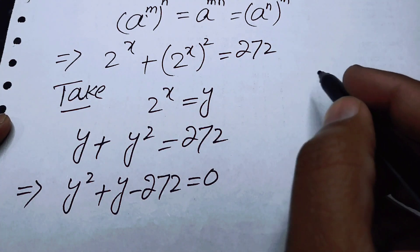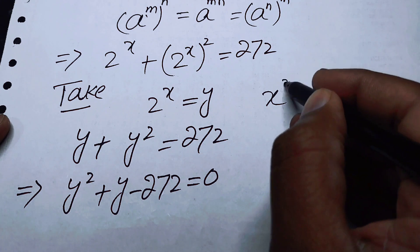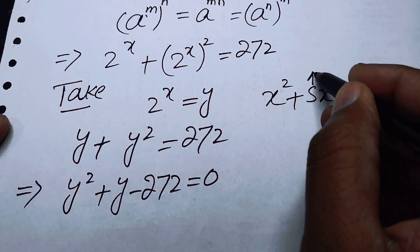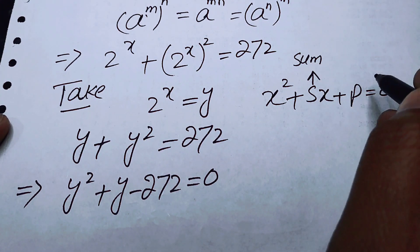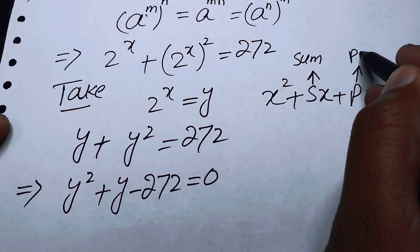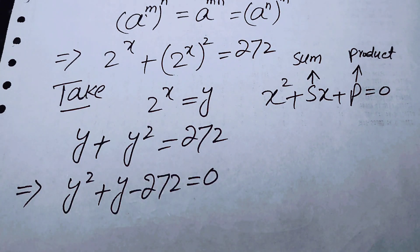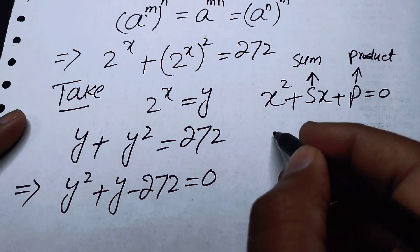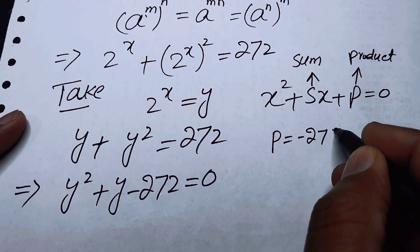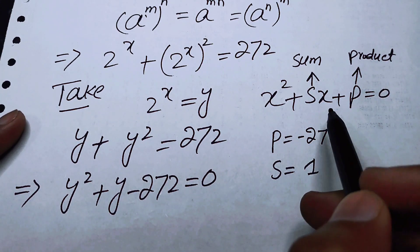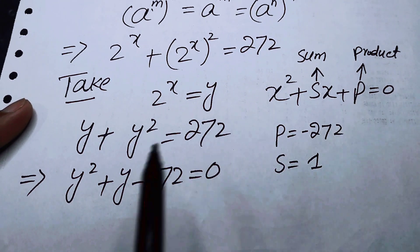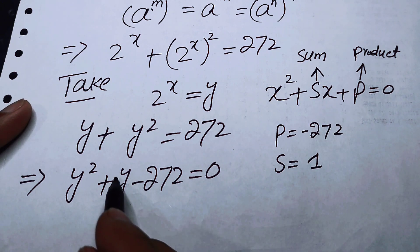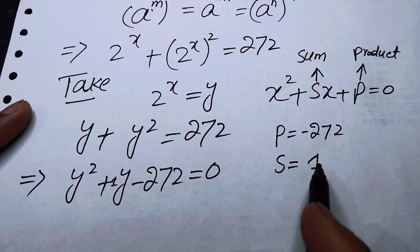The standard quadratic equation is x squared plus Sx plus P equals 0, where S stands for the sum of roots and P stands for the product of roots. Comparing our equation with this, we find P equals minus 272, and since the coefficient of y is 1, we have S equals 1, meaning the sum of roots equals 1.